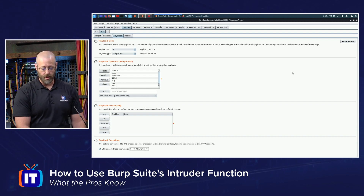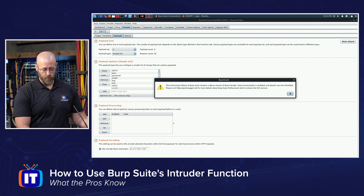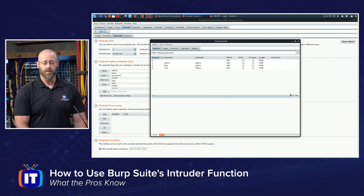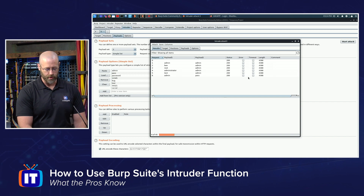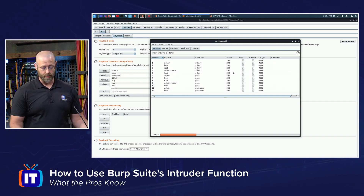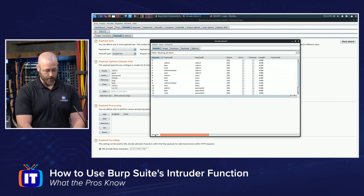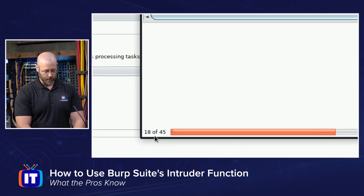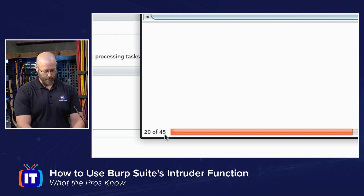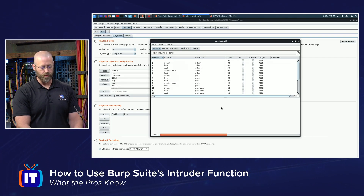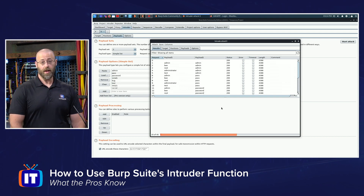Now I'm set to go. All I have to do is hit Start Attack. It will let me know that this is being throttled because it's the Community Edition, not the Full Edition of Burp Suite. This is going to run for just a few seconds — we can see we are progressing through the list. It's throttled, so if you have a long list it could take quite a few minutes, so make sure you have a cup of coffee and a sandwich ready to go.